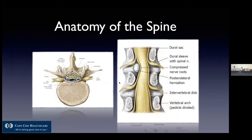Three-dimensionally, you can see how those neural elements travel through these bony structures. The spine is almost like a crystal lattice or coral — very porous. The nerves have to find their way through that bony structure and out into the extremity — in this case, the leg — in order to relay information back and forth.